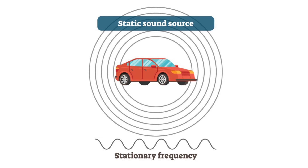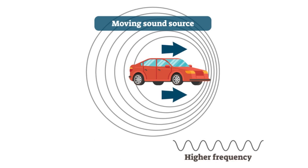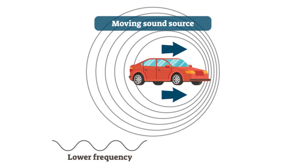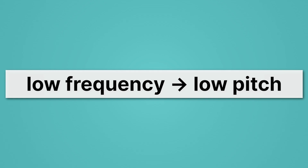But when your car starts moving, something interesting happens — those rings get moved. Your car is now moving forward, so each time it goes to release a wave of compression, it's moved a little bit since the last one. Because it's moving forward, this has the effect of cramming those waves together in front of it, meaning there are more peaks per second, so we experience a higher frequency, and high frequency gives us high pitch. Meanwhile, we experience lower frequency behind the car, because the car has traveled some each time it goes to release a subsequent compression wave, so those rings get farther apart — fewer per second gives you a low frequency and low pitch.